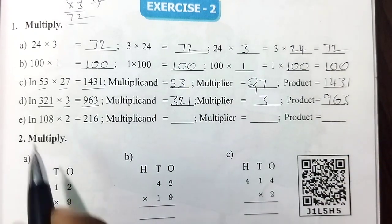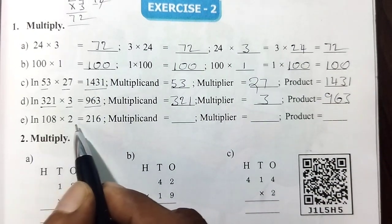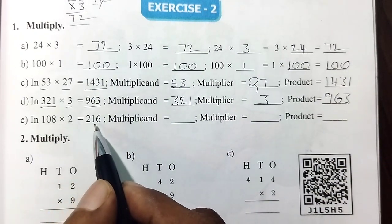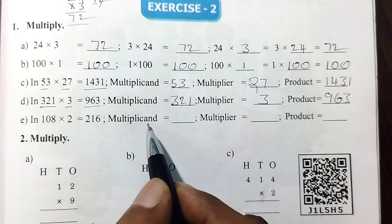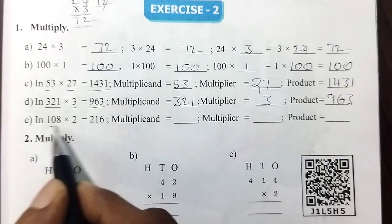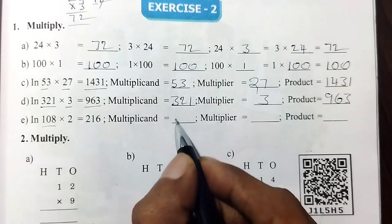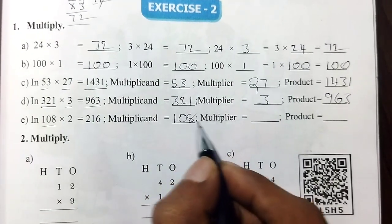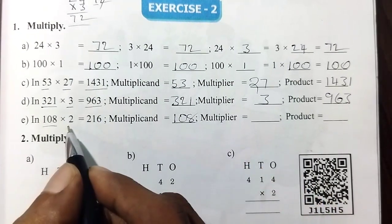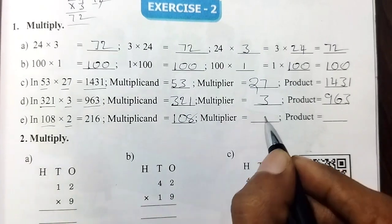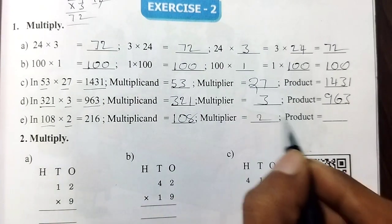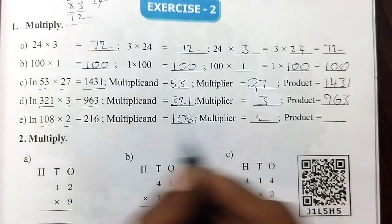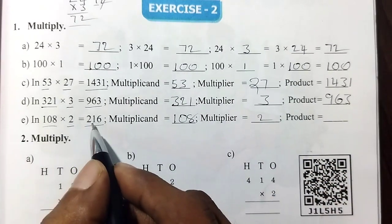Next, 118 into 2. The first number is 118, the multiplier is 2, and the product is 216.